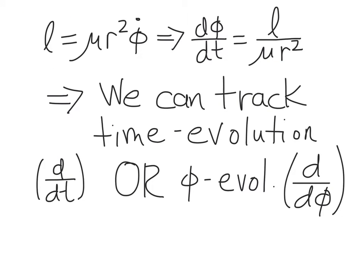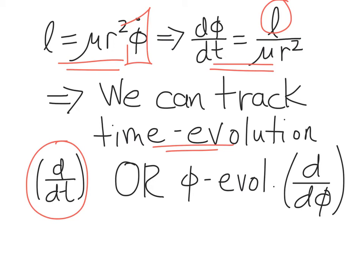The angular momentum for our system, L, is defined such that L is proportional to phi dot. Since angular momentum is a conserved quantity, we can solve for phi dot, or d phi by dt — that's just L over mu r squared. Because L is conserved, there is a one-to-one relationship between the time at which we consider the system and the angle phi through which the system has revolved.